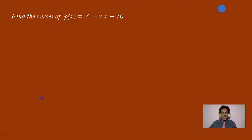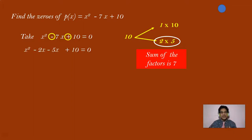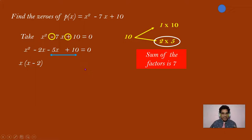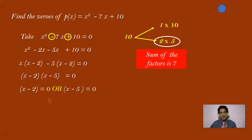Find the zeros of x squared minus 7x plus 10. As usual, we will take it as 0. You need to factorize 10: 1 times 10 are 10, and 2 times 5 are 10. The factors that add up to 7 are 2 and 5, so we use 2 and 5. We write x squared minus 2x minus 5x plus 10 equal to 0. Taking x common from the first pair gives x(x minus 2), and minus 5 common from the second pair gives minus 5(x minus 2). So x minus 2 is the common factor, giving (x minus 2)(x minus 5) equal to 0. Either x minus 2 equals 0 or x minus 5 equals 0 — at least one of them should be 0.